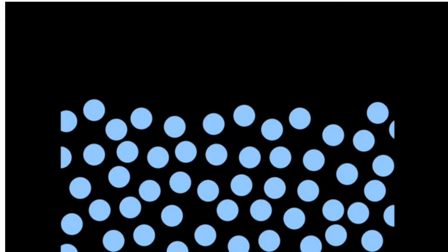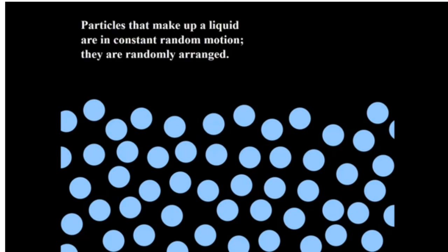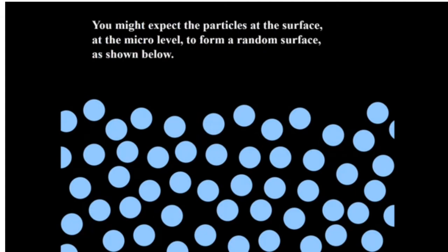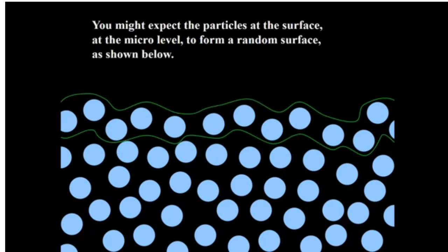Due to kinetic energy, the particles that make up a liquid are in constant random motion, and so they will have a random arrangement. You might expect the particles at the surface at the micro level to form a random surface as shown.